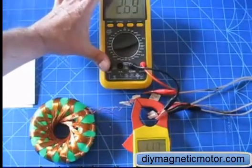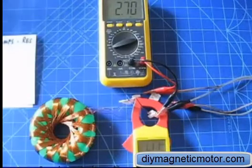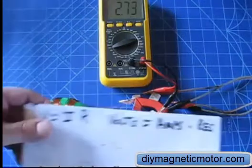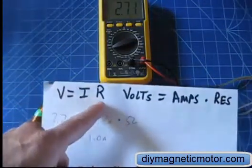Right now it's drawing 2.7 volts at 1.1 amps. I worked out a simple equation where volts equals the amps times the resistance.